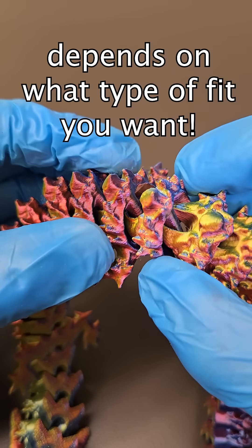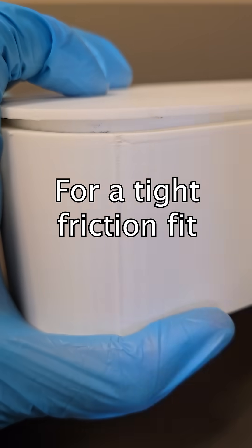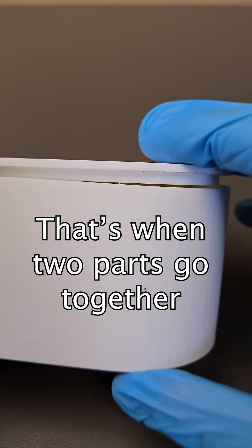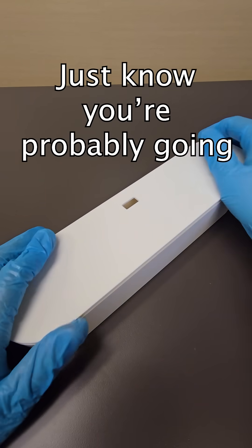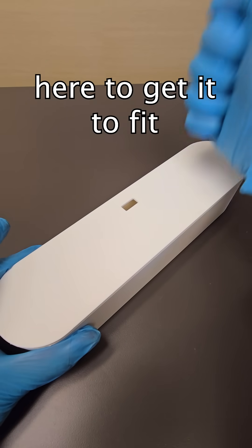The amount of gap you need depends on what kind of fit you want. For a tight friction fit, that's when two parts go together without glue, aim for a tolerance that's about 0.1 to 0.2 mm. Just know you're probably going to have to apply some force here to get it to fit.